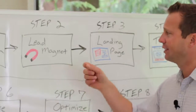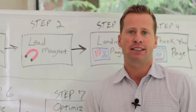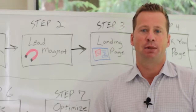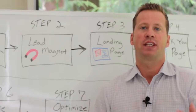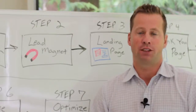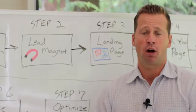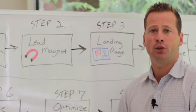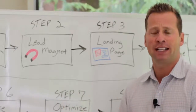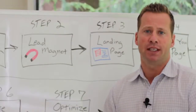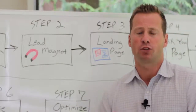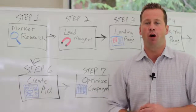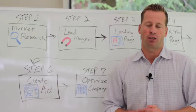Number two is the lead magnet. This is basically your ethical bribe. It's the reason somebody's going to click on an ad, and it's the reason somebody's going to give you their contact information, their email address, or their credit card for maybe a small purchase. We like to use some kind of a lead magnet or hook to incentivize people to opt in.